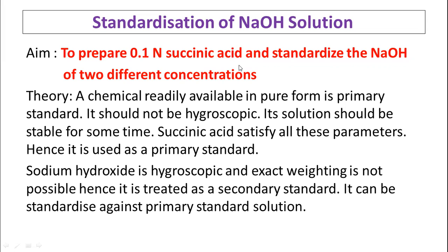In this experiment, first of all we have to prepare the solution of succinic acid at a concentration of 0.1 normal. We have to weigh the required quantity of succinic acid, dissolve it in 100 ml of water, and make the solution 100 ml at a normality of 0.1 normal. Then we will standardize sodium hydroxide solutions of two different concentrations.